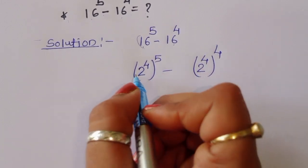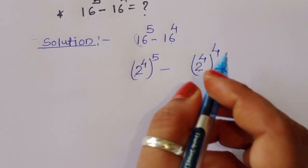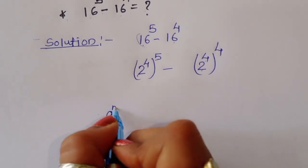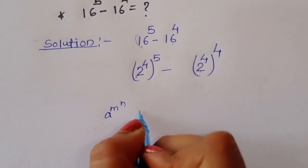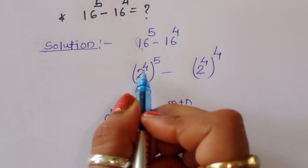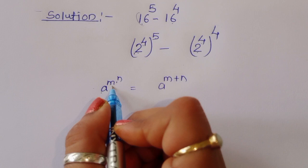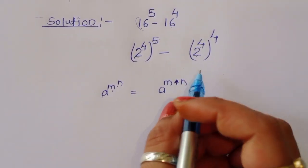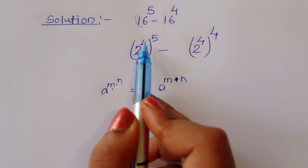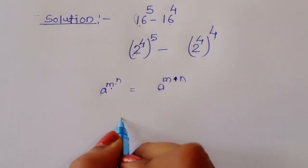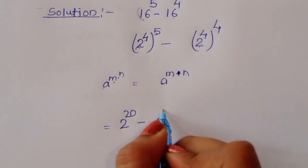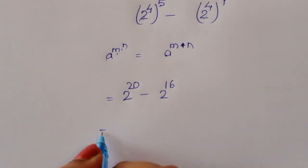Now we have 2 power 4, power 5 and 2 power 4, power 4. We know the formula: a power m, power n is equal to a power m times n. So 2 power 4 power 5 becomes 2 power 20, and 2 power 4 power 4 becomes 2 power 16. So we get 2 power 20 minus 2 power 16.